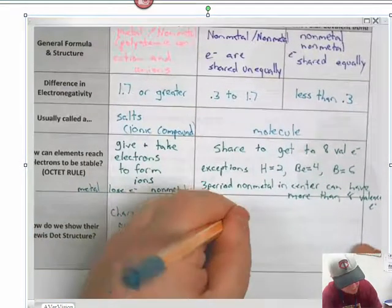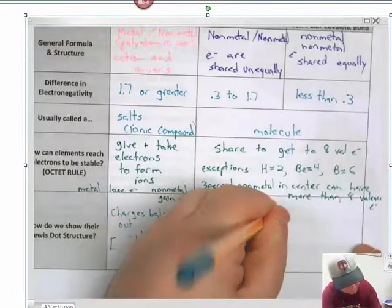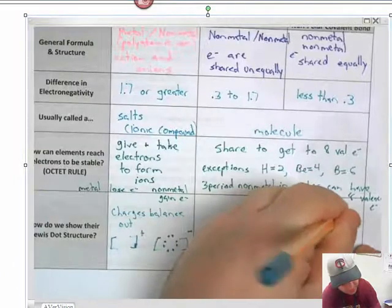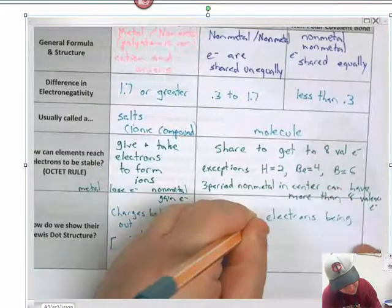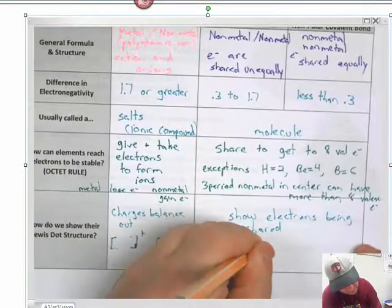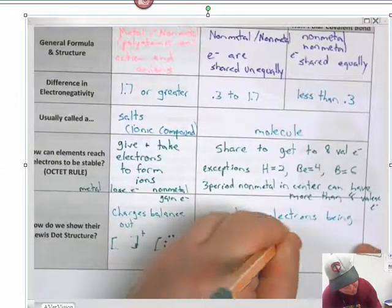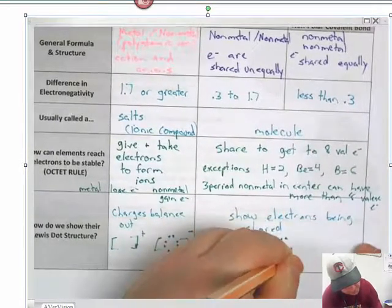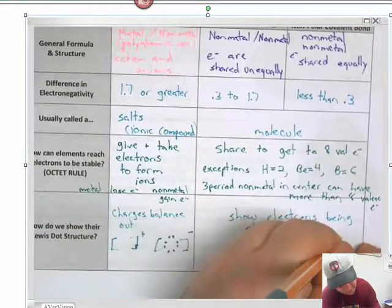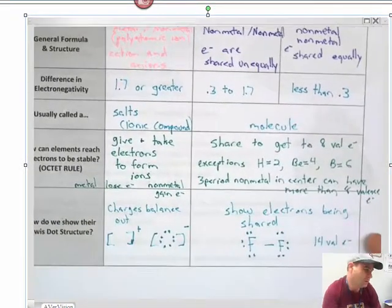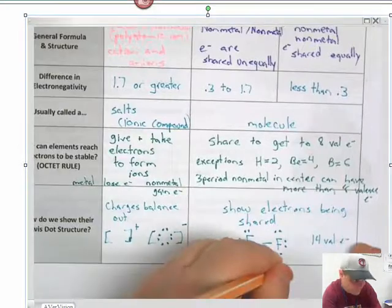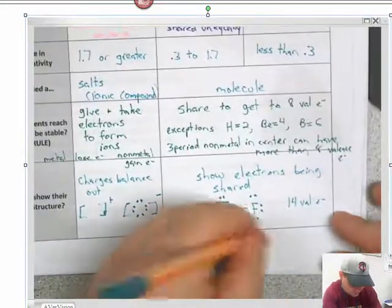Here, we show electrons being shared. Like, fluorine like this. Because this has 14 valence electrons. Or remember, you can also write it like this as well.